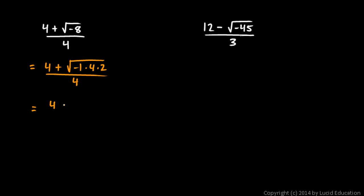Now the numerator is 4 plus, and let's write this square root of negative 1, that's an i, and this square root of 4 is 2. So I have i times 2, which I'll write as 2i, and then this 2, nothing can be done with this 2, it remains under the radical.